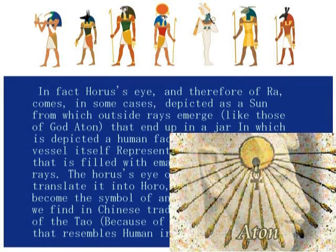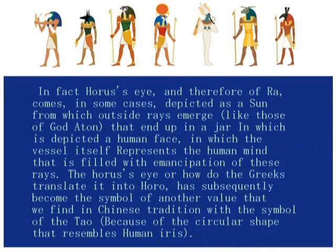ホルス、つまりラーの目は、いくつかのケースでは、アトンの神のように、光線を外に発する太陽を表しています。その光線は人間の顔を表した壺の中に入っていきます。つまり、人間の心はこれらの光線で満たされているというわけです。ホルスの目はギリシャ語のホロに訳され、別の価値を持つようになり、結果的に、中国語のタオ、道のシンボルとともに、中国の伝統にもなっています。